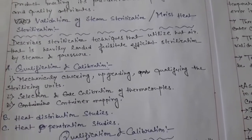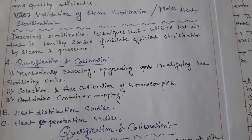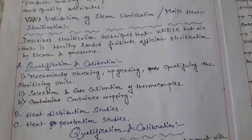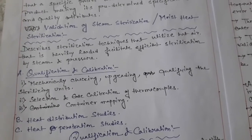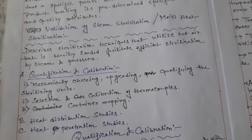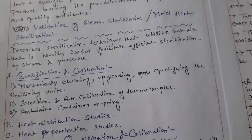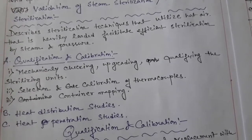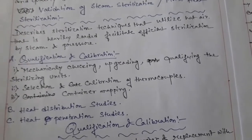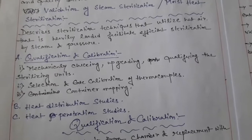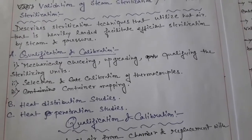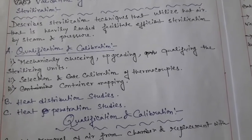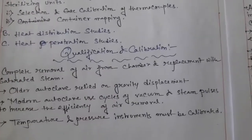The first point of autoclave validation is qualification and calibration. Qualification means how much quality the machine has, and calibration means how you calibrate the machine — that means making it error-free. There are three sub-points: mechanically checking and upgrading, qualifying the sterilizing units; second, selection and calibration of thermocouples; and third, container mapping.